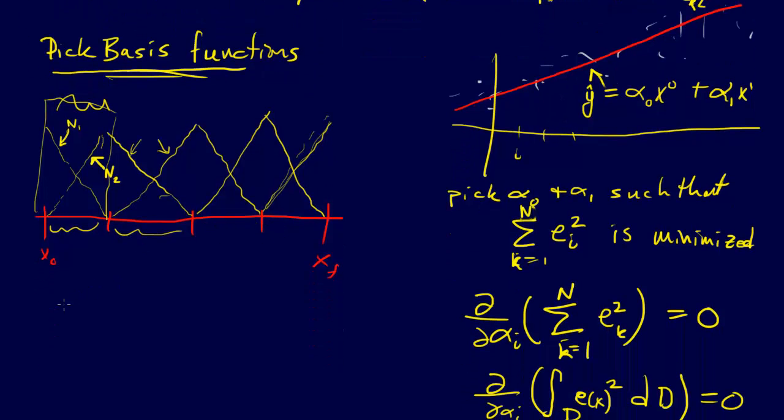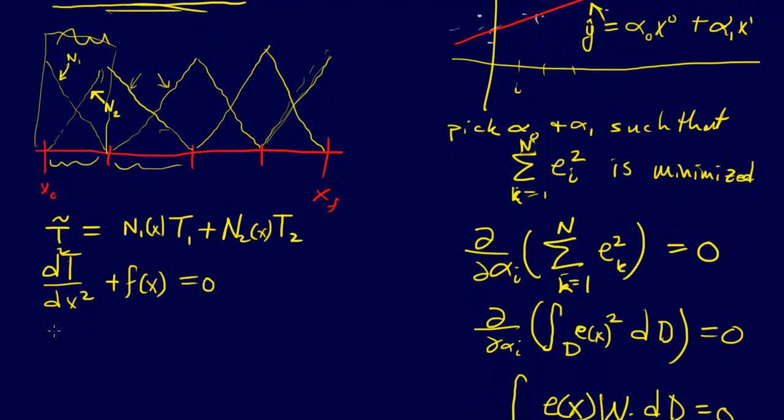We say t, I'm going to call that t squiggly because it's an approximation, and it's going to be n1, and that's a function of x by the way, times t1, plus n2 of x times t2. What that means is that we just have a linear change in our temperature. We can write the original function, so we plug this into our original, so we have d second derivative of t with respect to x, plus f of x equals 0. Then we plug in this t squiggly here, we get d squared t squiggly dx plus f of x.